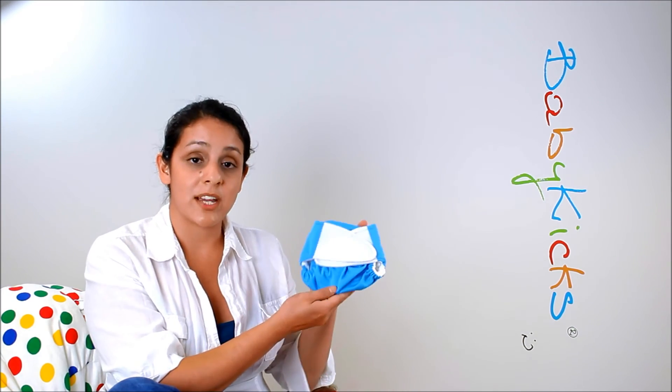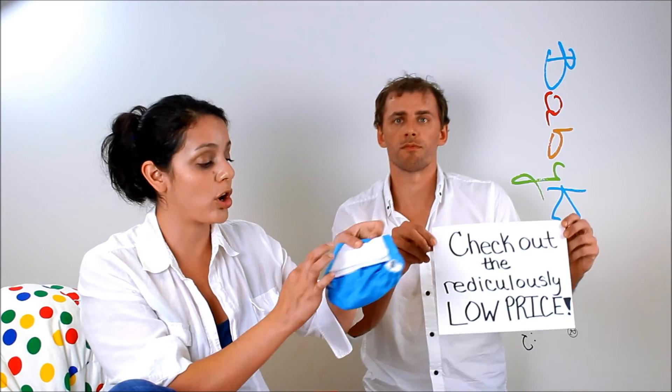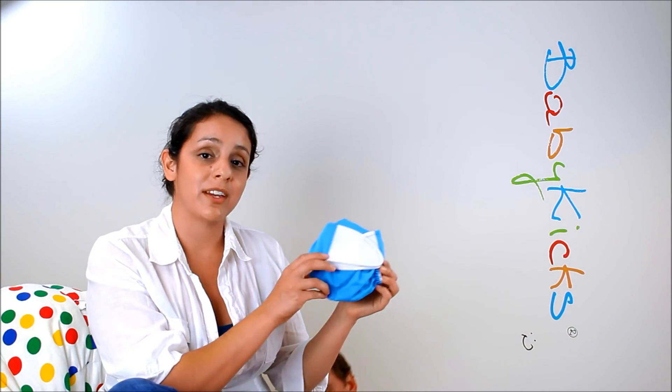The velcro version can be used as a newborn diaper. You simply fold it in our unique newborn fold, cross over the tabs just like this and the legs get really small. So this diaper will truly fit birth through potty training.